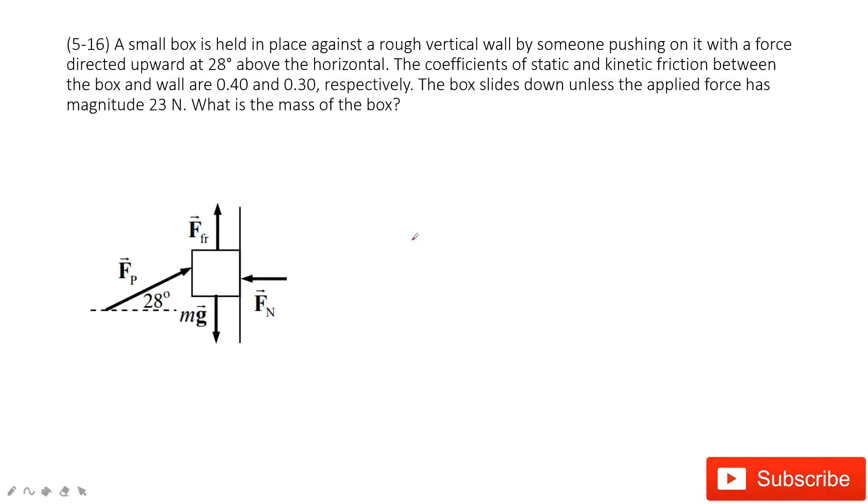In this one, you can see we have a small box and someone just pushes it against a roughly vertical wall. We know the angle, the force by the person, and also we know the static and kinetic friction coefficient 0.4 and 0.3.